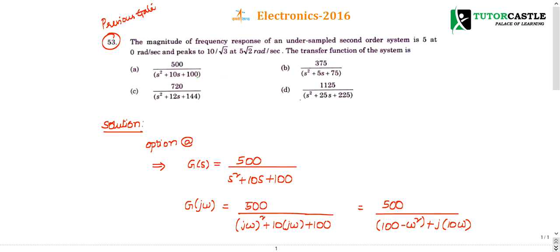Question number 53: The magnitude of frequency response of an undersampled second-order system is 5 at 0 radians per second. So the magnitude is 5 at omega equal to 0, and the magnitude is 10 by root 3 at omega equal to 5 root 3.